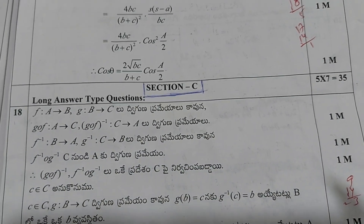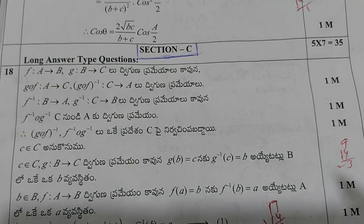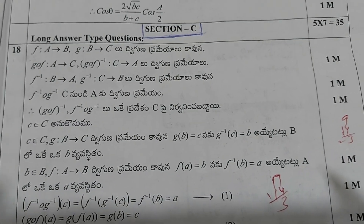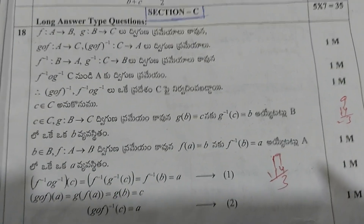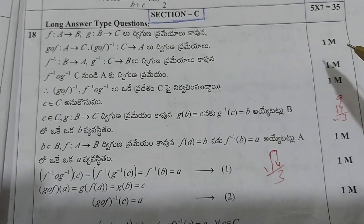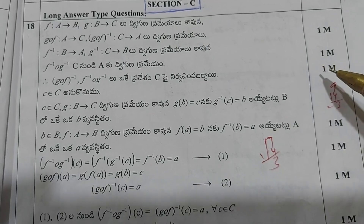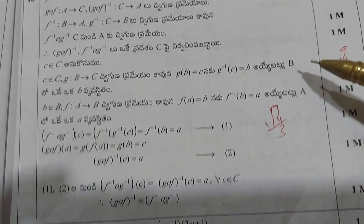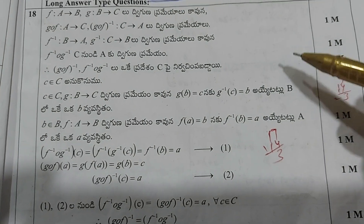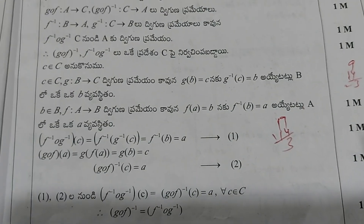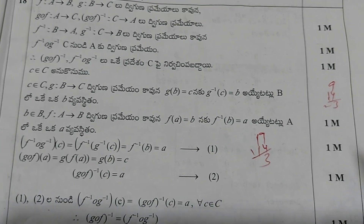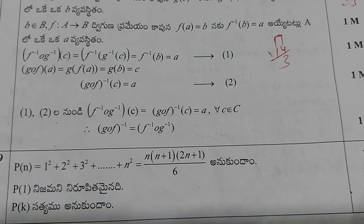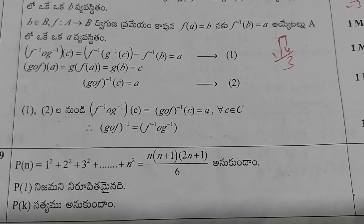Now we move on to the final part, Section C — long answer type questions. So 7-mark questions, 5 we have to write; 5 sevens are 35. Question number 18, the first one in Section C: 1 plus 1 plus 1 plus 1 plus 1 plus 1 plus 1. This is the solution for question number 18. Now the 19th one — this is a Telugu medium paper, of course you can understand. English medium students also can understand this terminology.